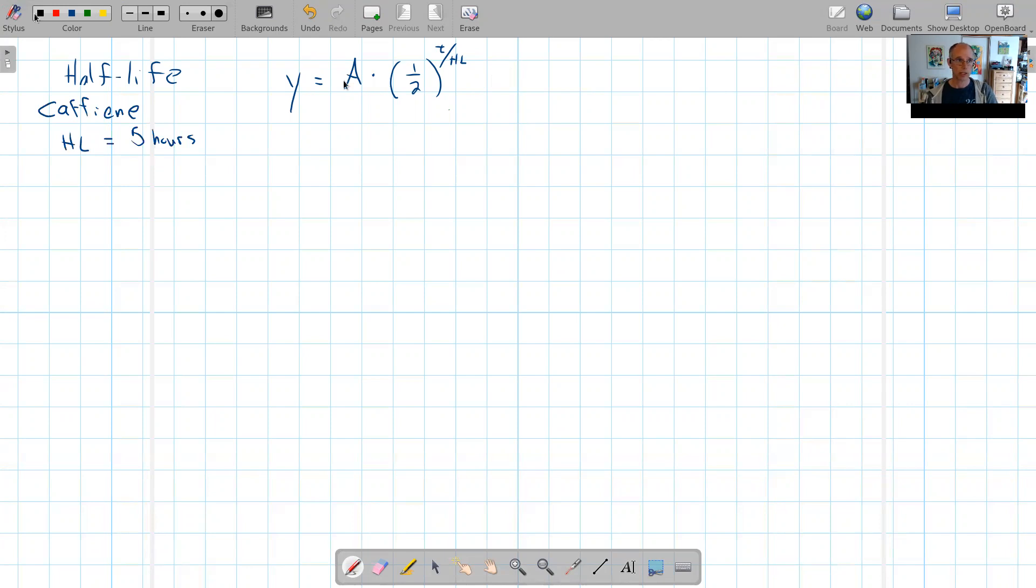So I could also look at this using the percent rate of change version of an exponential equation. Starting amount times one minus that percent change to the power of T. So T is still hours here, same starting amount, but R here is the hourly rate of change, hourly percent decrease. I want to know what that is if the half-life is five hours.